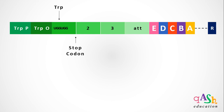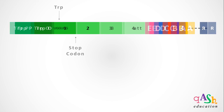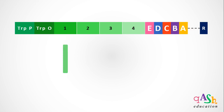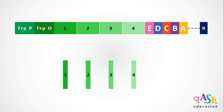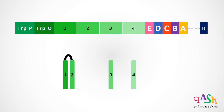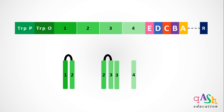There is a premature stop codon present between segment 1 and segment 2. The sequences of segments 1, 2, 3, and 4 are such that after transcription into their respective mRNAs, they can form alternative RNA structures. Segment 1 and 2 can combine via complementary base pairing forming a hairpin loop structure. Similarly, segment 2 and 3 can combine, and segment 3 and 4 can also combine via complementary base pairing forming hairpin loop structures.